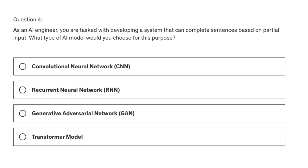Let's look at the fourth question. As an AI engineer, you are tasked with developing a system that can complete sentences based on partial input. What type of AI model would you choose for this purpose? We have four options: Option A, convolutional neural network (CNN); Option B, recurrent neural network (RNN); Option C, generative adversarial network (GAN); Option D, transformer model.